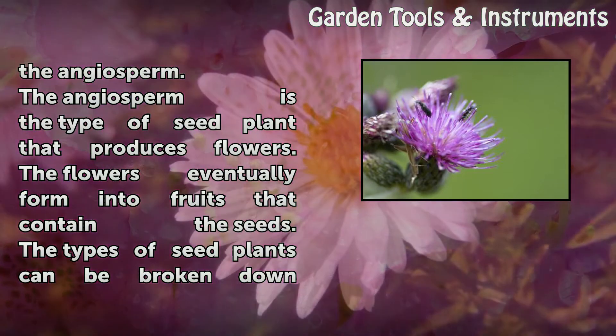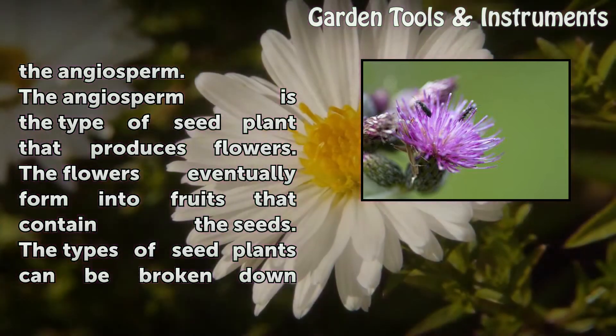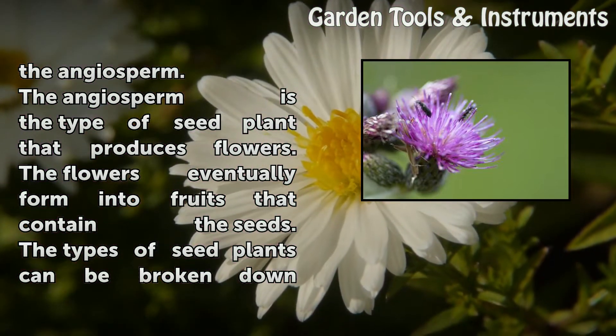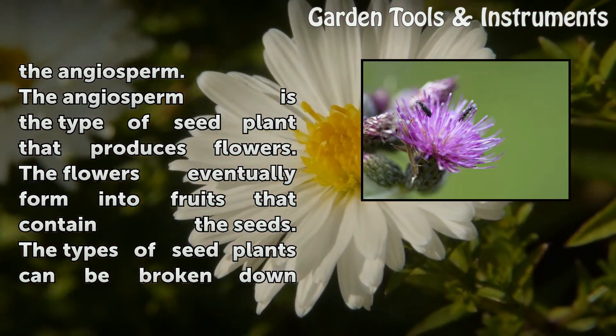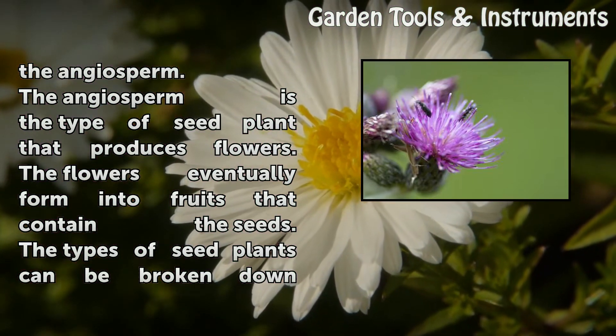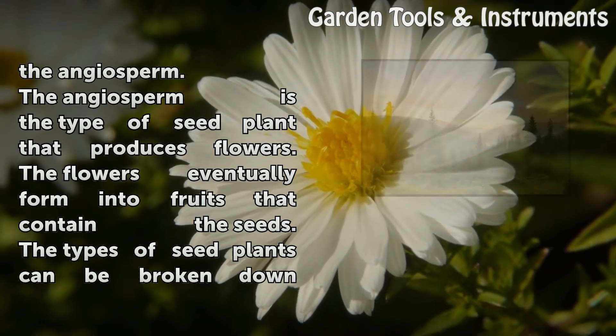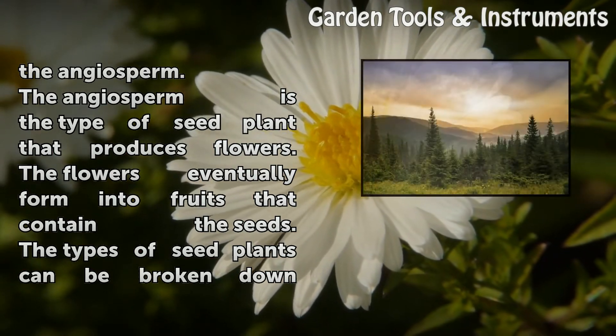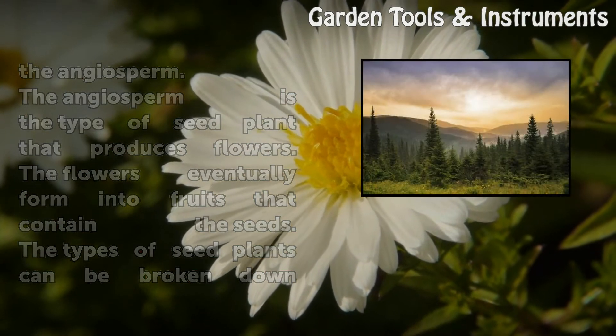The second type of seed plant is the angiosperm. The angiosperm is the type of seed plant that produces flowers. The flowers eventually form into fruits that contain the seeds.